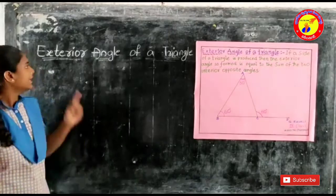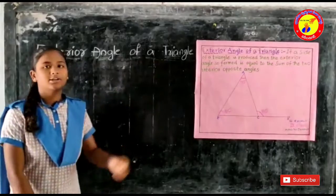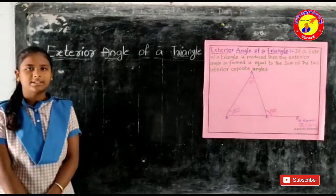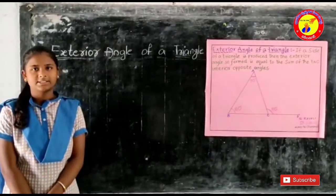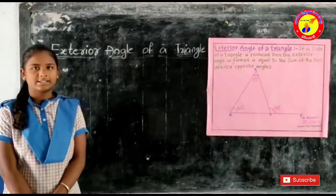Now I am going to explain about exterior angle of a triangle. So friends, what is a triangle? The triangle is a three-side polygon and it has three vertices and it has three interior angles.